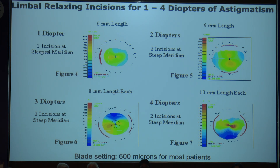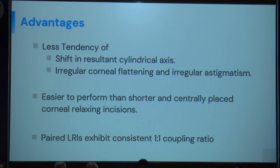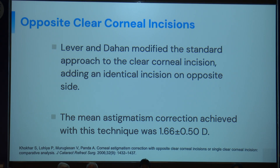According to nomograms, one incision at the steeper meridian corrects approximately one diopter; two paired incisions at the steeper meridian correct around two diopters. The advantages of LRI include less tendency for shift in the resultant cylindrical axis, and irregular astigmatism — mostly seen with arcuate incisions — is avoided. LRI is easier to perform than shorter, centrally placed incisions, and they typically exhibit a one-to-one coupling ratio.